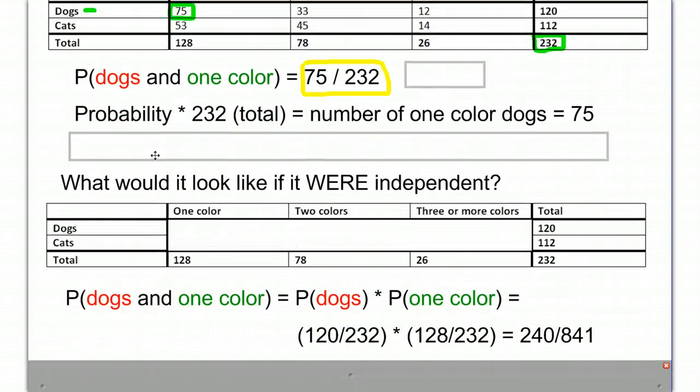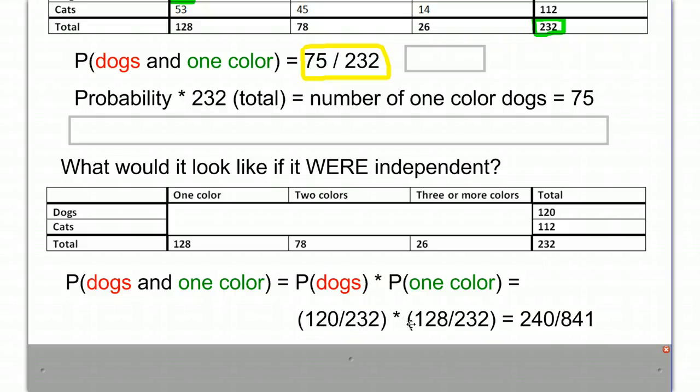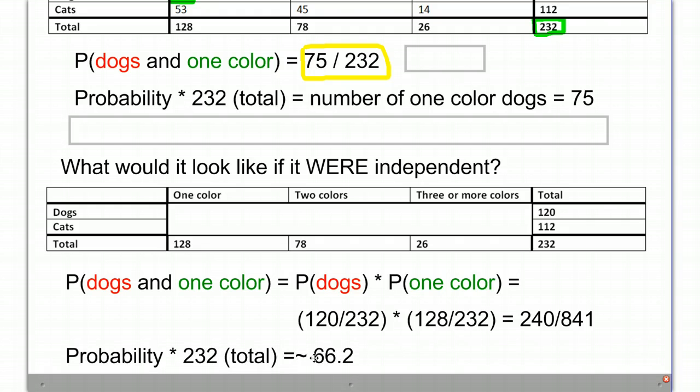In the same way, you're going to take this probability here, this fraction, and multiply it by 232. And you're going to get roughly 66.2 as the value that we would expect to get if they were independent.